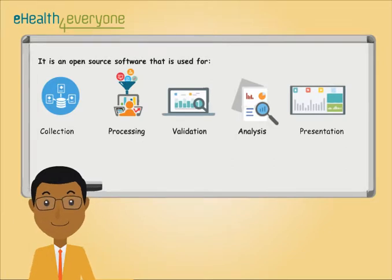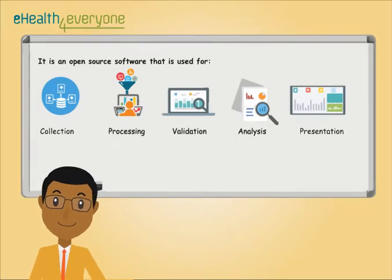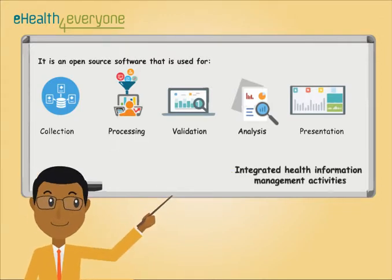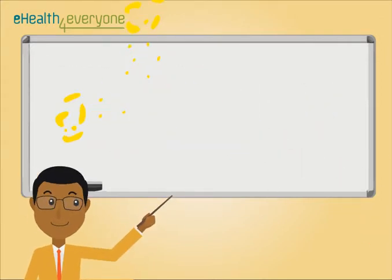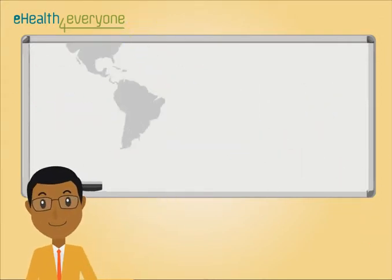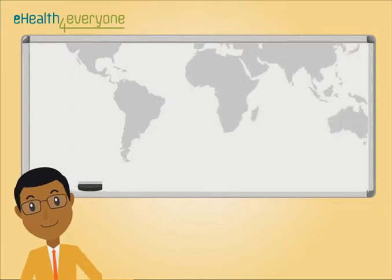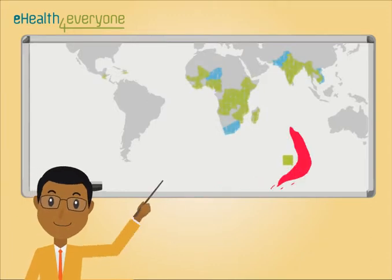This is tailored but not limited to integrated health information management activities. DHIS-2 is the preferred health management information system in 47 countries and even more organizations across four continents.